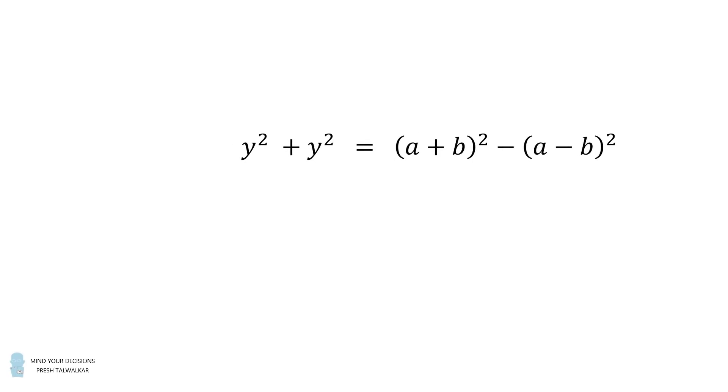We will then simplify this equation. The left hand side is 2y squared, and the right hand side will expand each binomial. We can then cancel out a squared and b squared. So we are left with 2y squared is equal to 4ab. We divide both sides by 2, and then we simplify. Thus y squared is equal to 2ab.